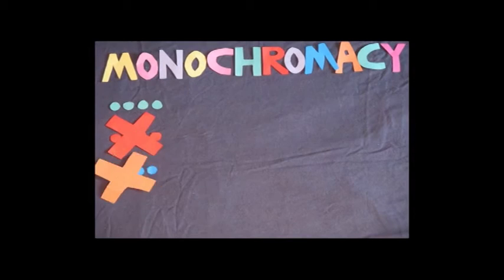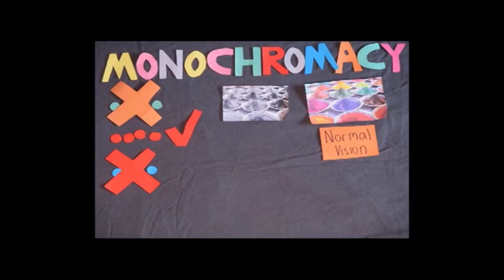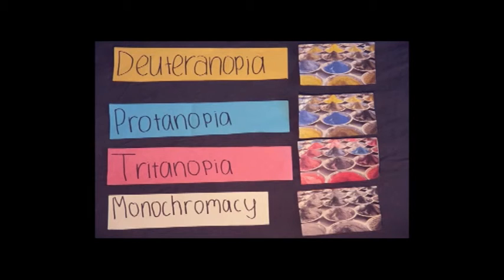Finally, a deficiency of two cones is called monochromacy. People with monochromacy cannot perceive any colors, and they live in a greyscale world. Monochromacy is very rare, and is thought to only affect 0.003% of the population or less.